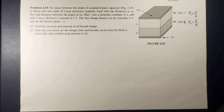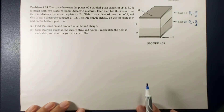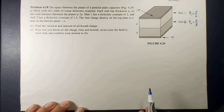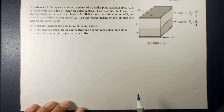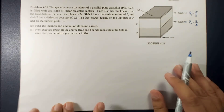Hi guys, this is Sir Ernest and today we're going to finish our discussion on problem 4.18. In this video we're going to find the location and the amount of all bound charges due to the polarization. Now that we know about free and bound charges, we are going to recalculate the field in each slab, which we're going to confirm with letter B.